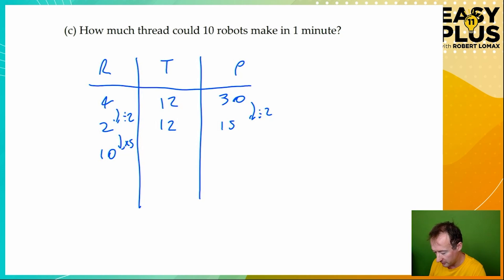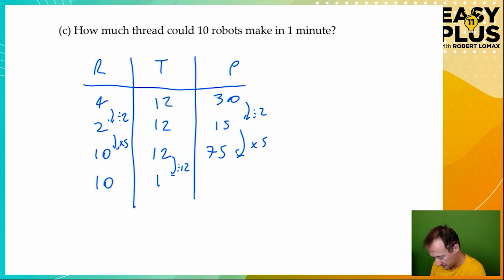So we've times the number of robots by 5. So we're also going to times the amount of thread, the amount of product, by 5. And that gives us 75. So now we know that 10 robots could make 75 kilometres of thread in 12 minutes. But we need to know how much they could make in 1 minute. 1 minute is a twelfth of 12 minutes. So if we've reduced the amount of time they have 12 times, we need to do the same with the amount that they can make, because if they have less time, they can make less. Now 75 divided by 12 is a bit tricky. So we're going to need to do a side calculation for this.